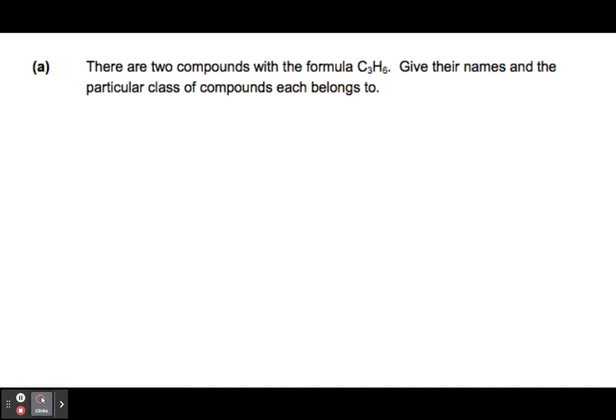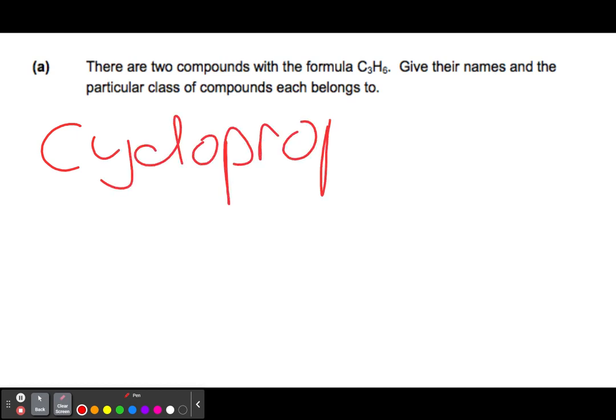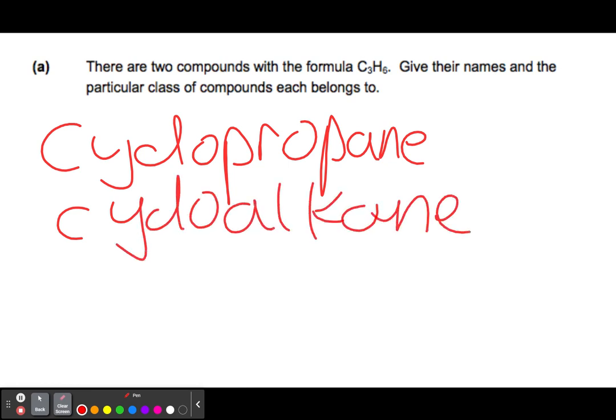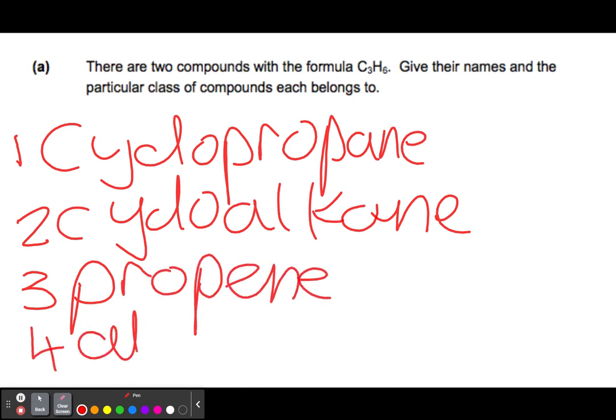Question 1a: There are two compounds with the formula C3H6. Give the names and particular class of compound each belongs to. This is just a matter of knowing your isomers. The first one is cyclopropane, which is a cycloalkane. That's one mark for the name, one mark for the class. The second one is propene, which is an alkene. Very simple, that should be fairly straightforward.